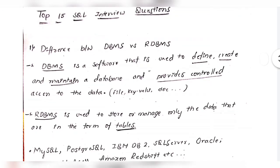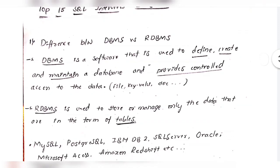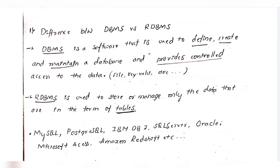First question: what is the difference between DBMS and RDBMS? DBMS is nothing but software used to define, create, manipulate, and maintain the database, and it provides controlled access to the data. DBMS can handle various data formats like file, formula, key-value, and document data.